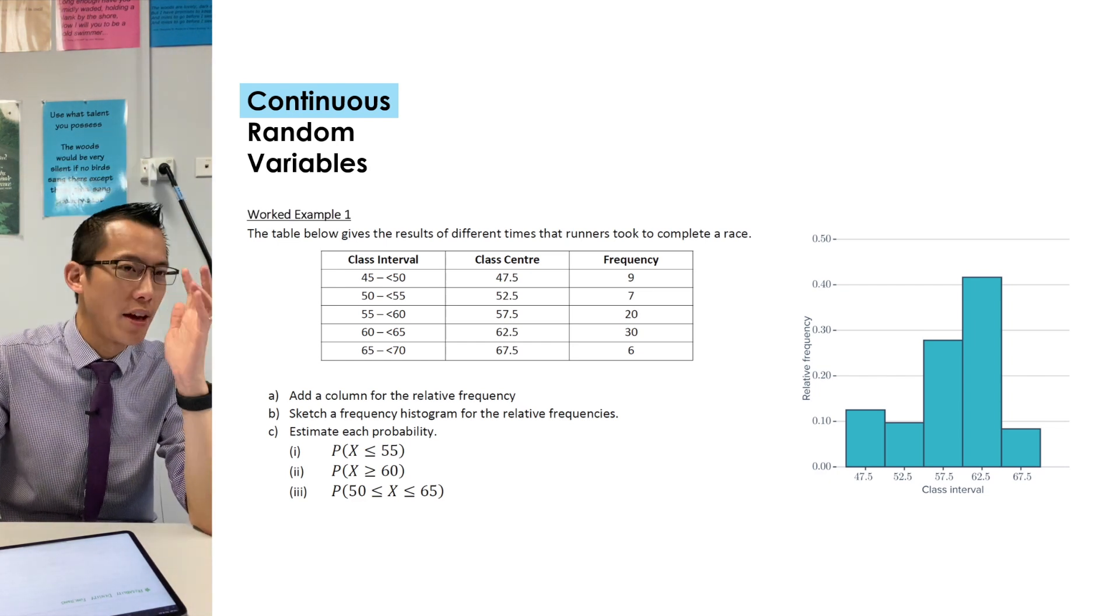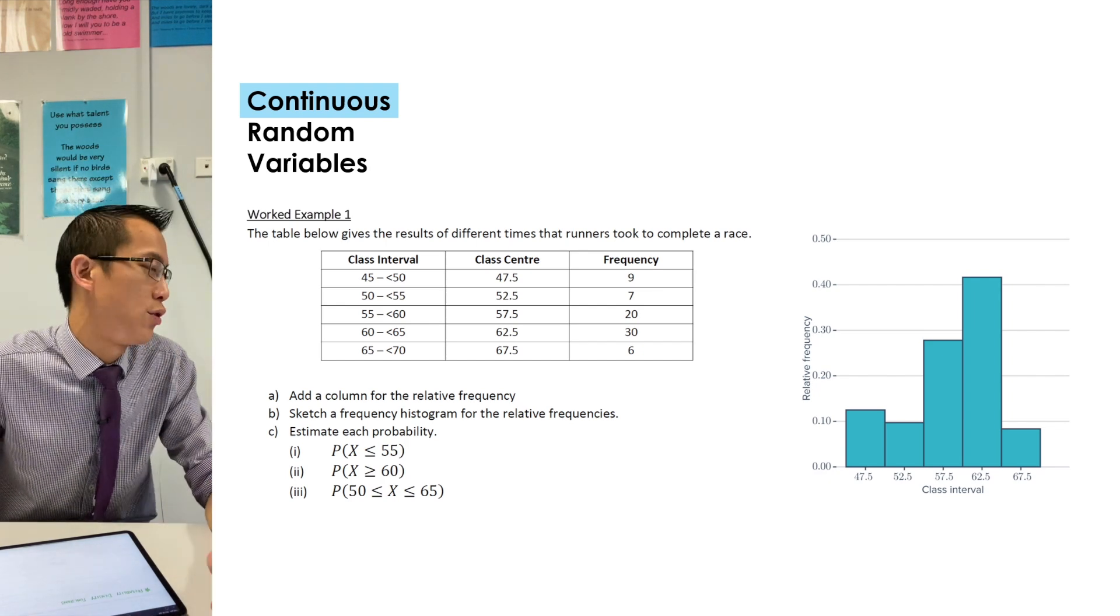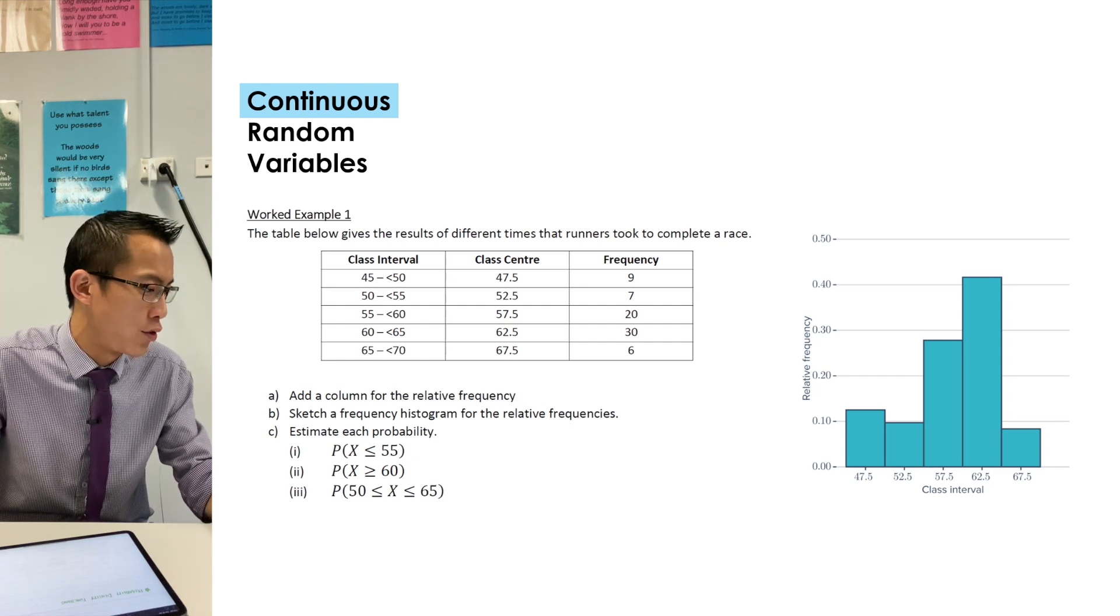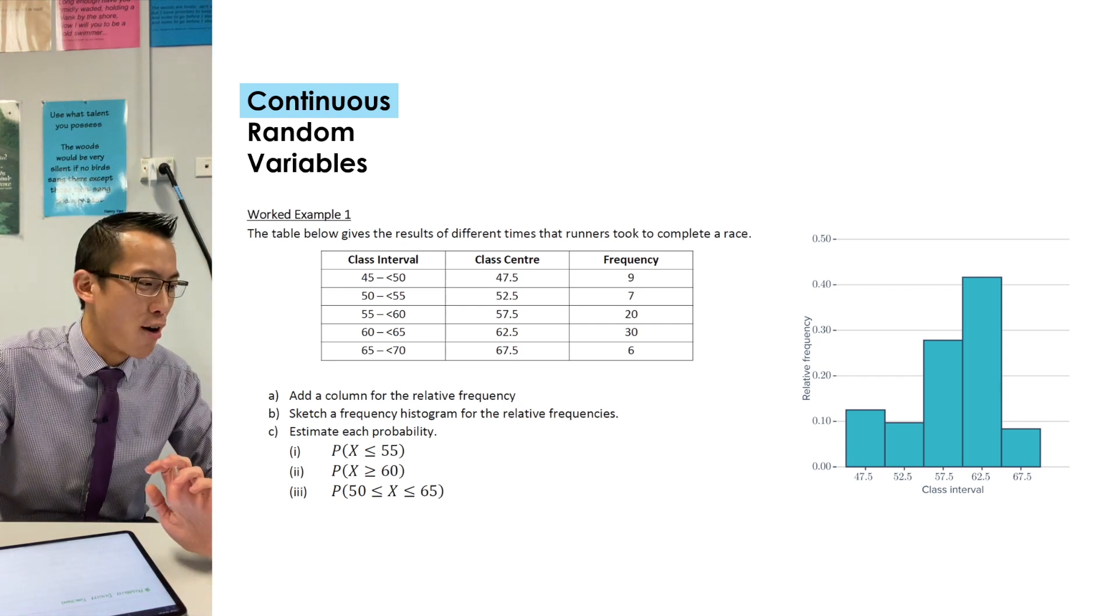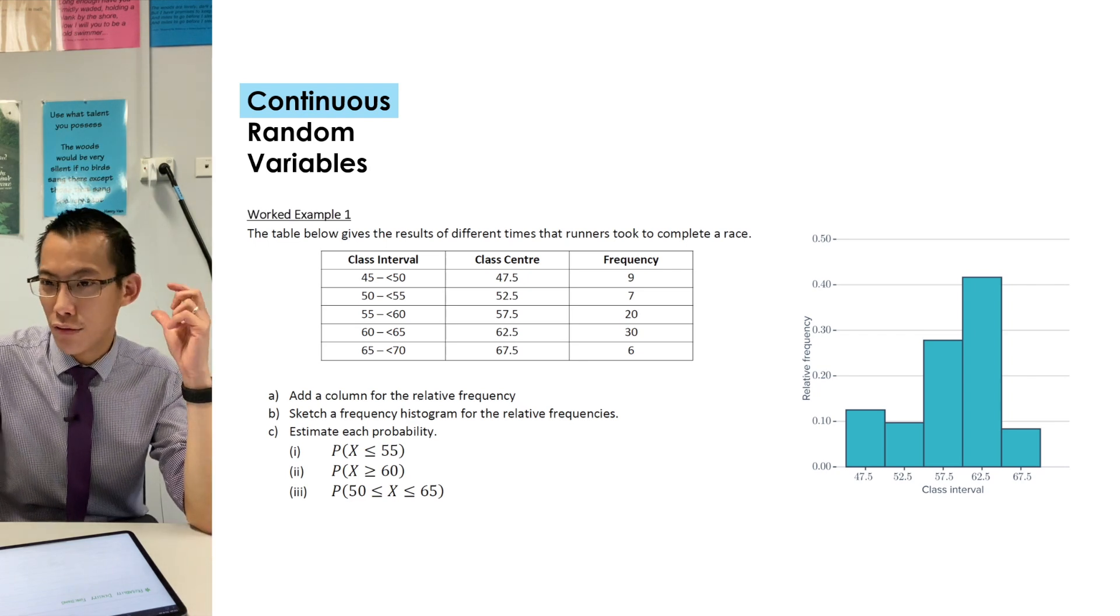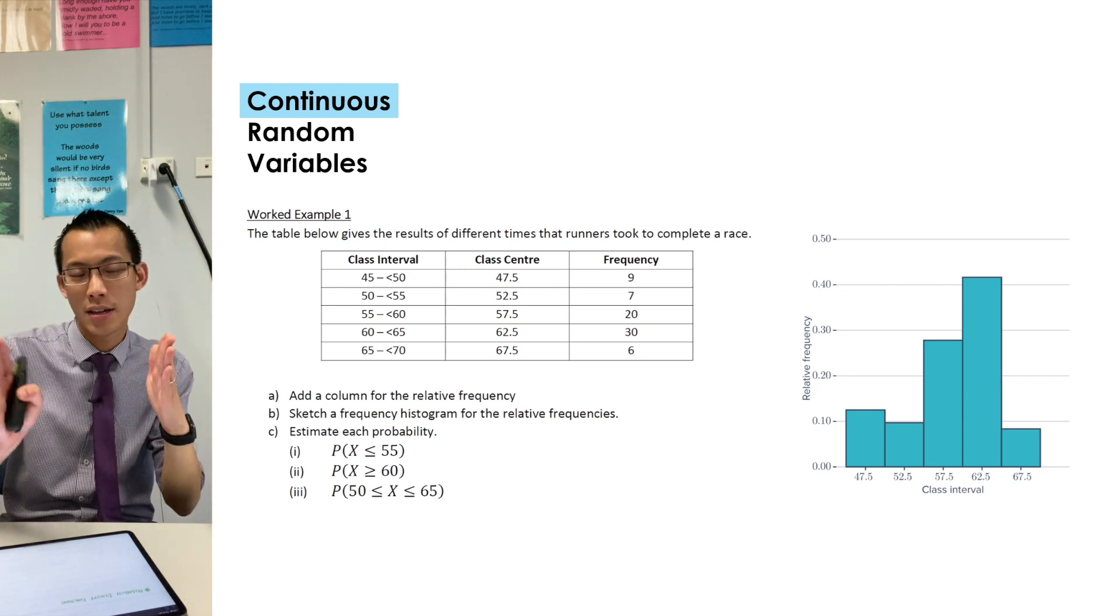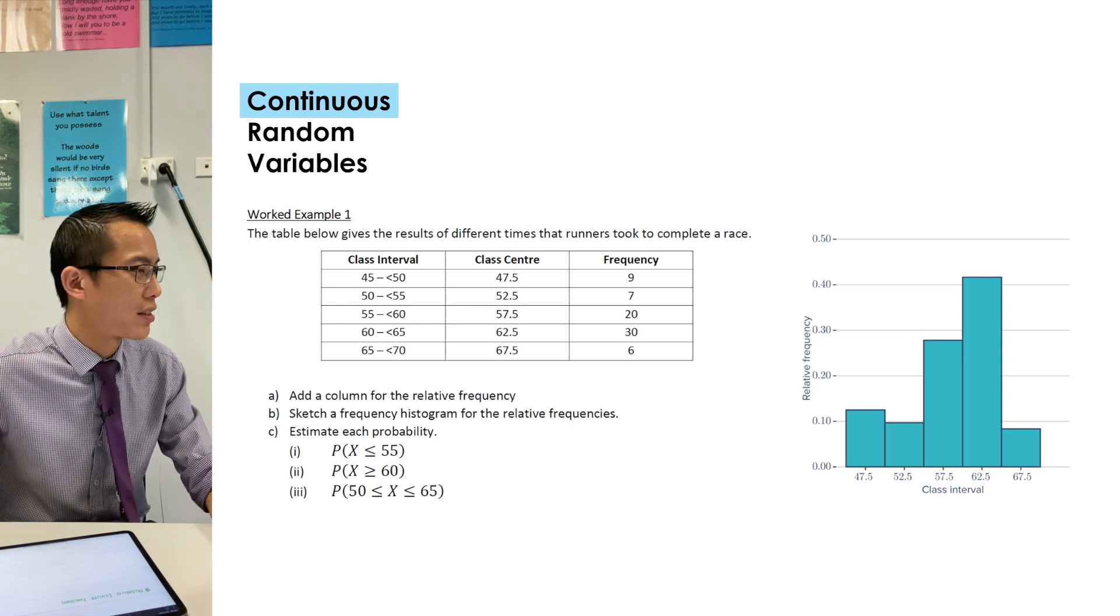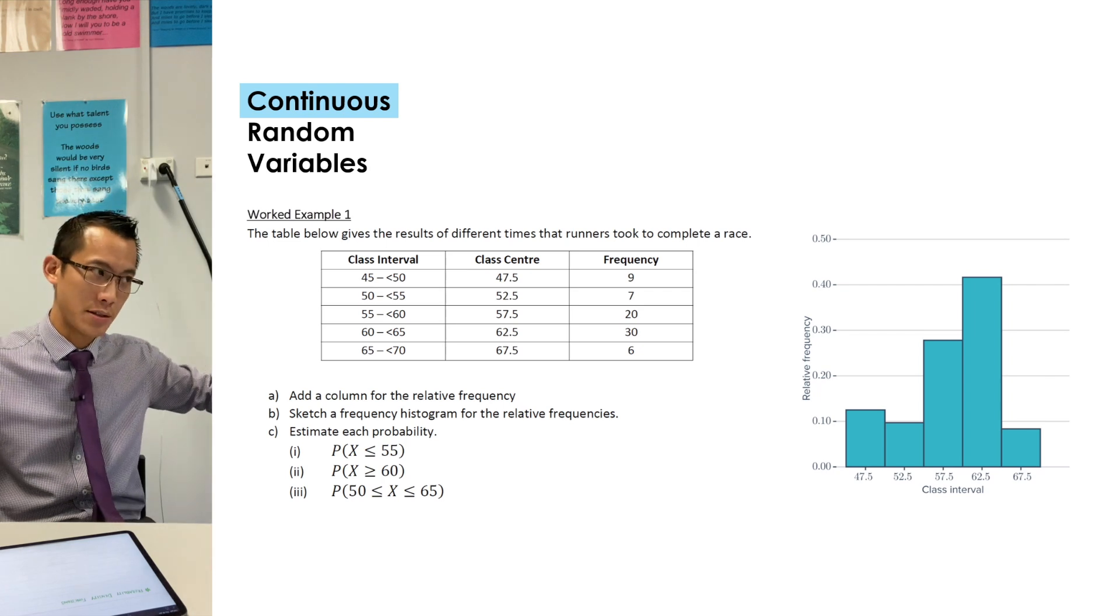So all you would do is you would add up 9 over 72 plus 7 over 72, and that'll give you the probability, so what's that? 16 on 72, and you would simplify that if you wanted. Conversely the probability of the time, the runner's time being greater than or equal to 60, instead of taking the two fastest classes, here I'm taking the two slowest classes, so the 60 to 65 class, and the 65 to 70 class, and then finally you've got the one in the middle there, the probability of being between 50 and 65, so that's the middle three classes.